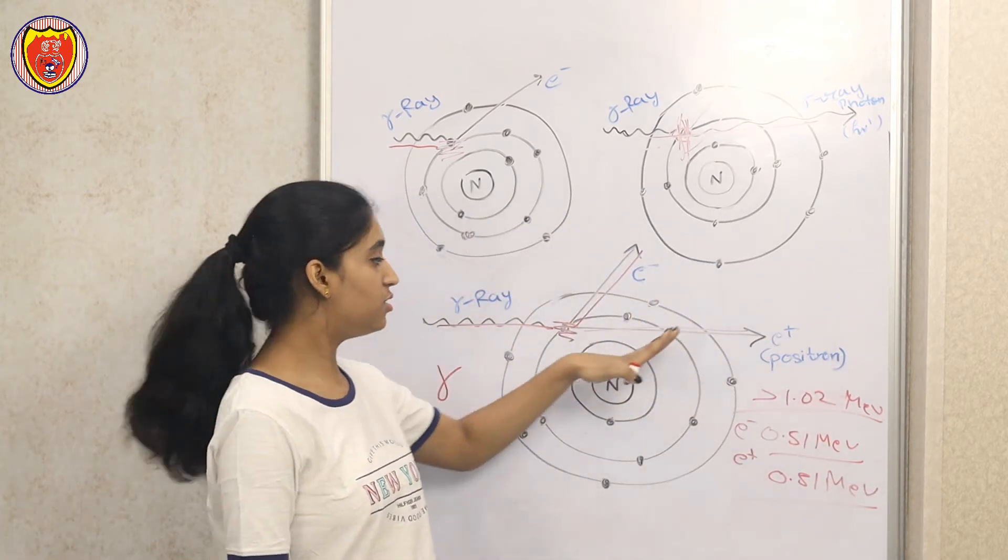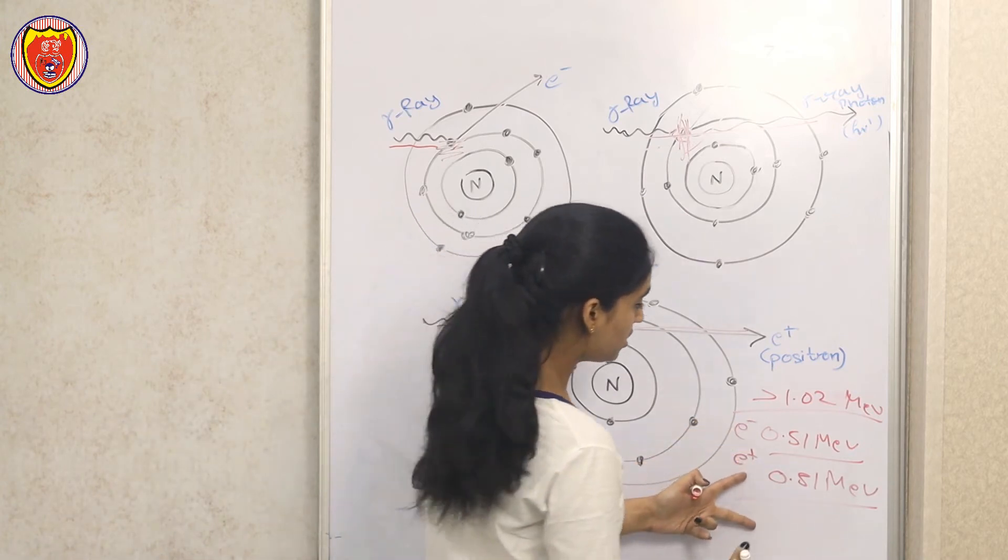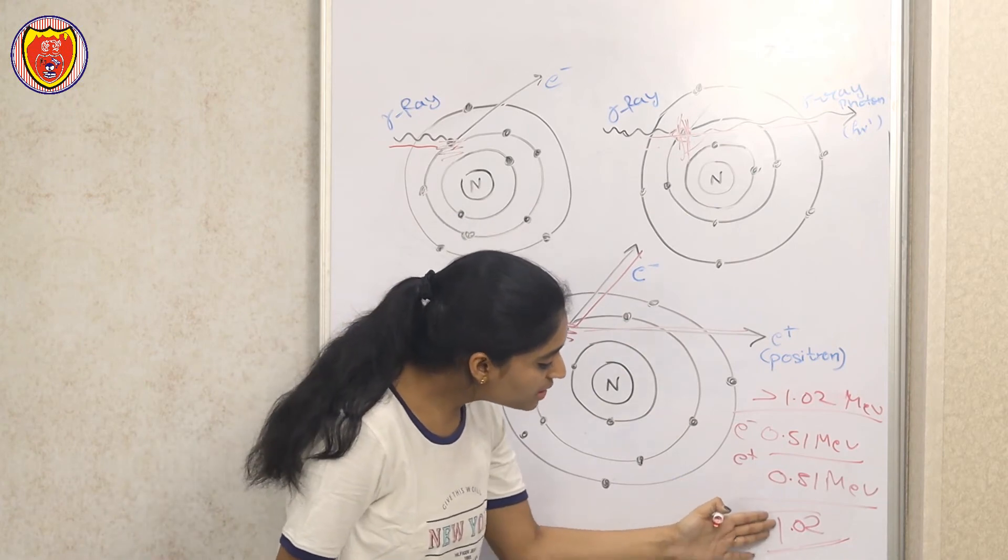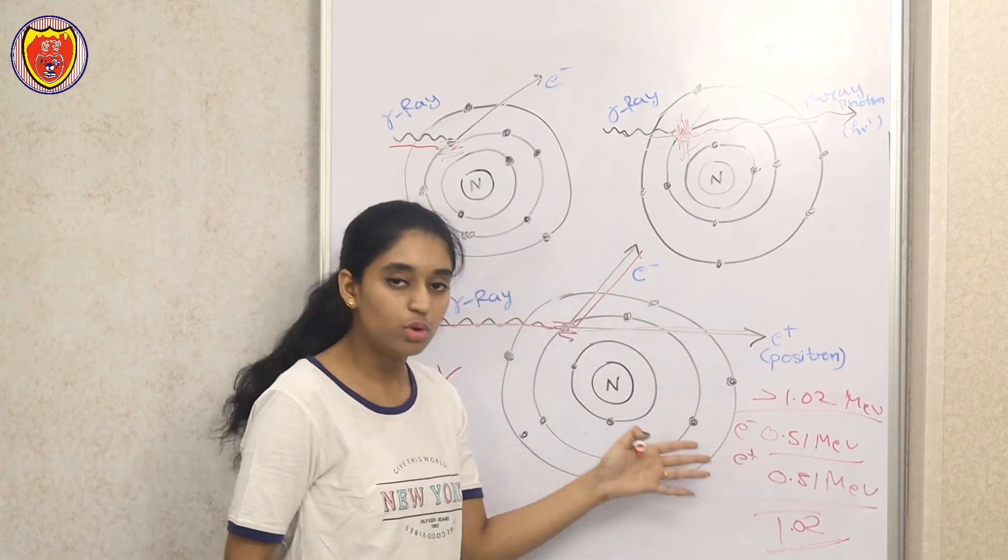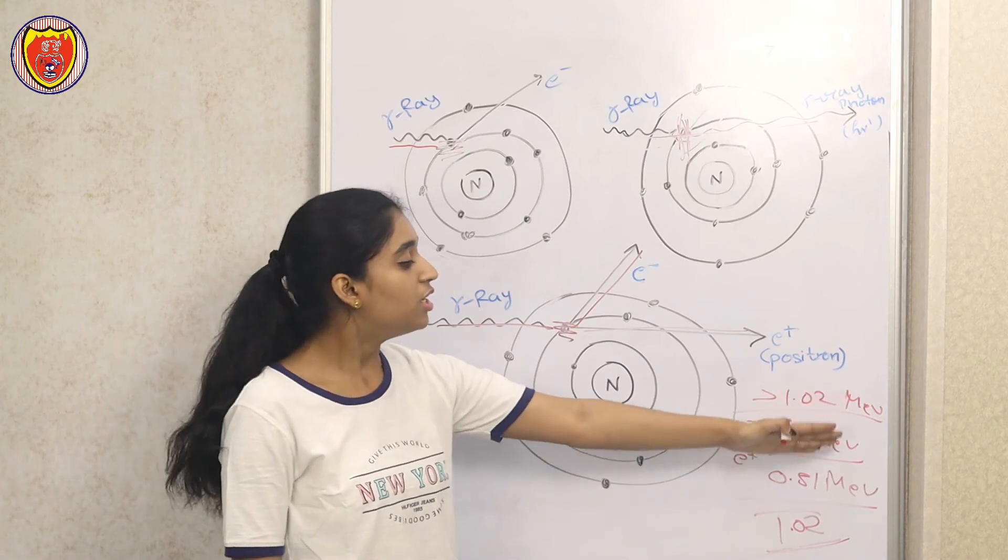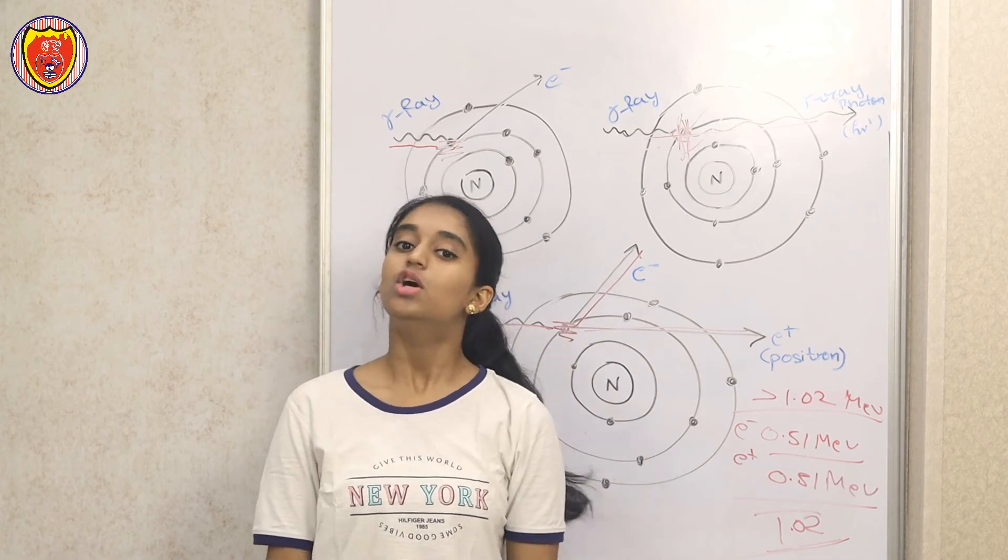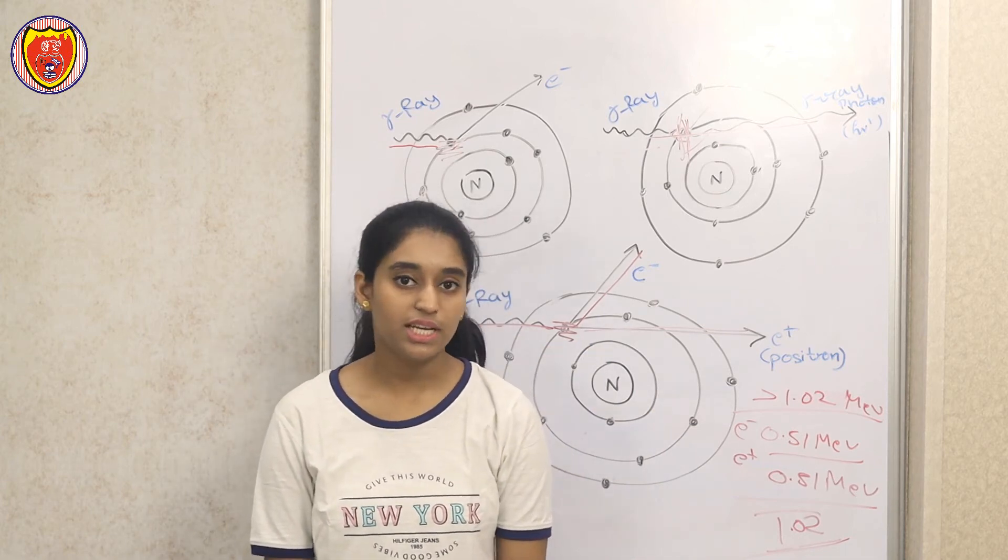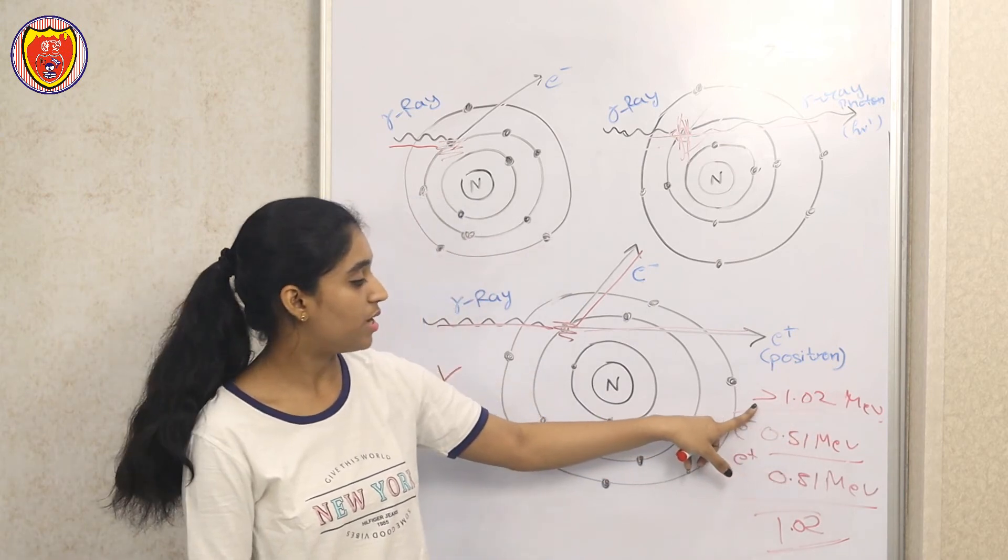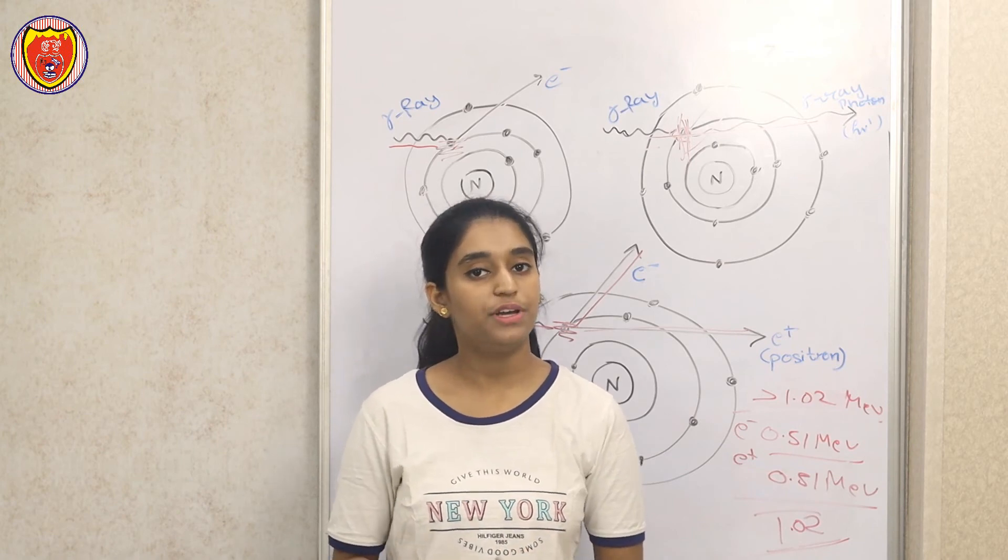What happens when the gamma rays interact in this mode? The gamma ray doesn't exist anymore—the electron needs 0.51 MeV and the positron also needs 0.51 MeV to be liberated. So both together, 0.51 plus 0.51 equals 1.02 MeV. If the gamma ray energy is less than 1.02 MeV, how will this process happen? It can't happen. That's why we always have to focus on this—the gamma ray energy must always be at least 1.02 MeV. Otherwise, pair production mode doesn't exist.